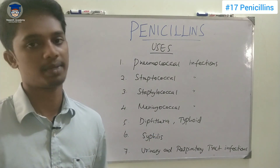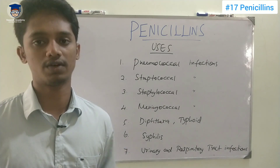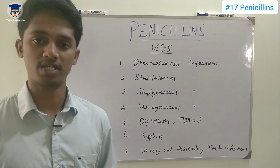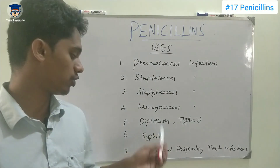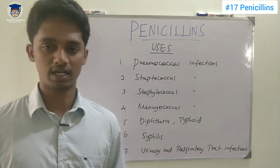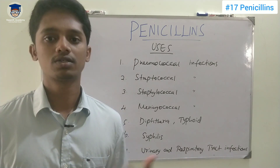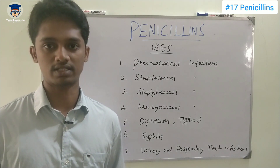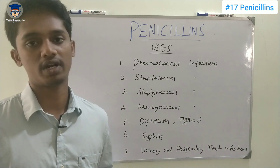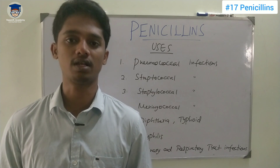Penicillin is also useful for diphtheria and typhoid. Syphilis, which is a sexually transmitted disease, is also treated with penicillin — specifically procaine penicillin. For urinary tract infections and respiratory tract infections, aminopenicillins such as amoxicillin or ampicillin are used. These are all the uses of penicillin.